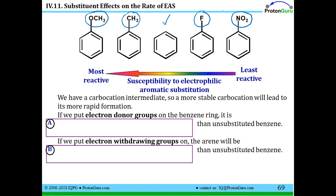One thing to keep in mind when predicting which reaction would be faster is that we have a carbocation intermediate. A more stable carbocation will lead to a more rapid reaction. We have this same idea in SN1 reactions — tertiary substrates are faster for SN1 or E1 reactions because of the more stable carbocation formed. The same principle applies to electrophilic aromatic substitution reactions.